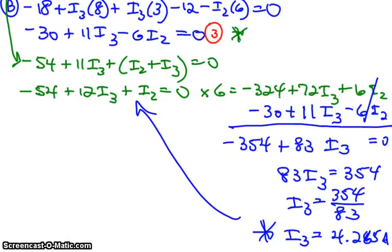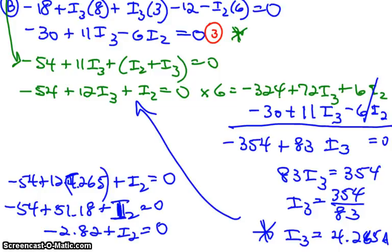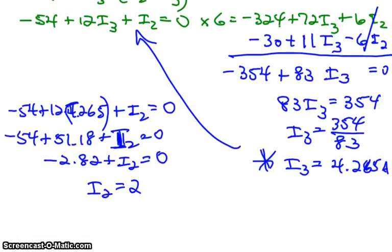Now if you want I2, well, just plug it into there. And you will find what I2 is. Minus 54 plus 12I3, we know I3 is 4.265 plus I2 equals zero. Minus 54 plus 12 times 4.265 is 51.18. 51.18 plus I2 equals zero. And minus 54, I get here a minus 2.82. I think it's supposed to be I2 here. Plus I2 equals zero. I2 equals 2.82 amps. So far I've been lucky. All the values have been positive. There's one answer. There's the other answer. And you can find I1.